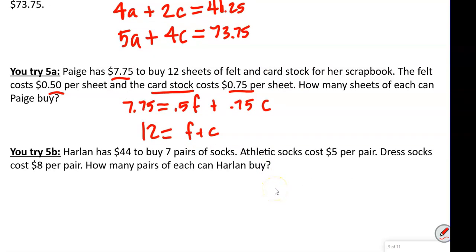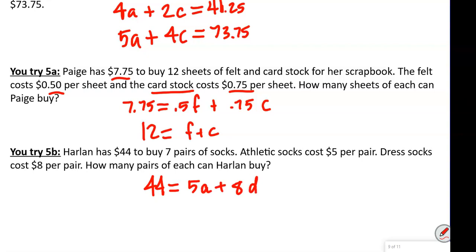Harlan has $44 to buy socks. Athletic socks cost $5 per pair and dress socks cost $8. So our first equation is: 5 times athletic socks plus 8 times dress socks equals 44. He needs to buy 7 pairs total, so A plus D equals 7. We'll learn how to solve these next week.